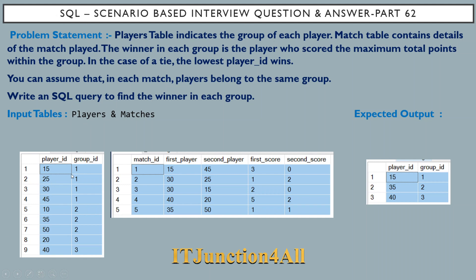We have mainly three groups: group ID 1, group ID 2, and group ID 3. For group ID 1, we have four players associated — player ID 15, 25, 30, and 45. For group ID 2, we have three players: 10, 35, and 50. And for group ID 3, we have two players: 20 and 40.